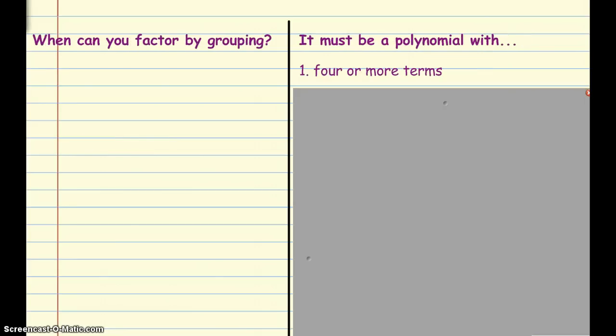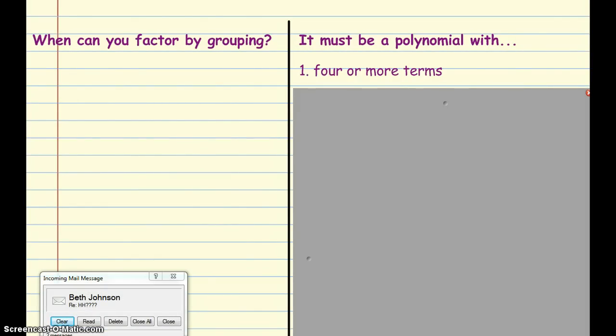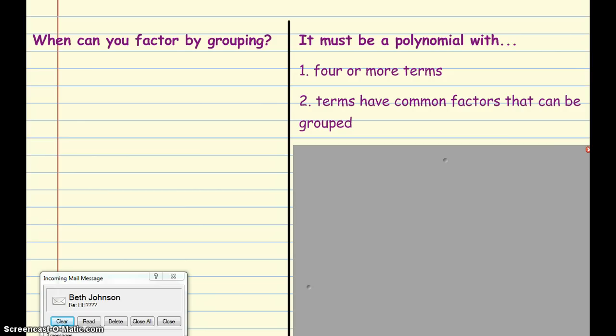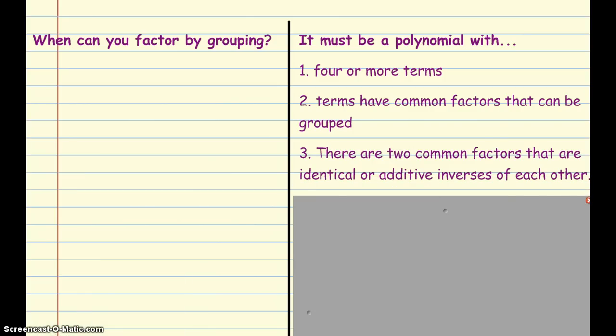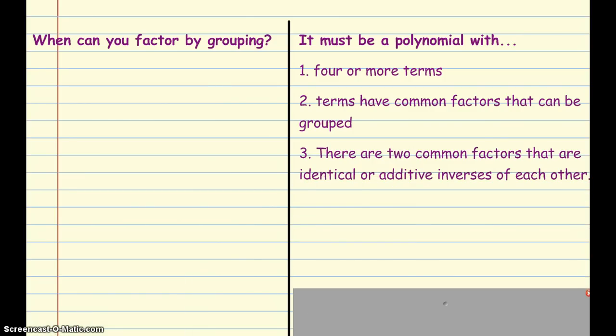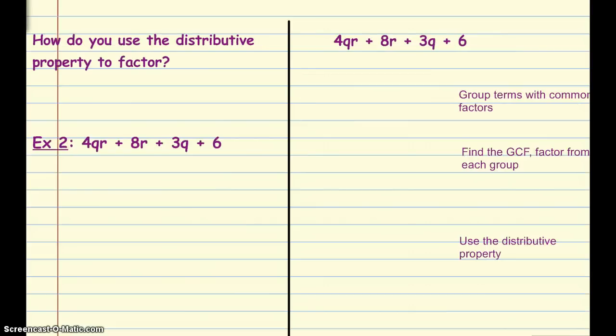Okay, so let's do the second example, or some more directions. It says, when can you factor by grouping? We factor by grouping when it's a polynomial, and it must have four or more terms. The terms have common factors that can be grouped. There are two common factors that are identical or additive inverses of each other. So we're going to do a couple of examples that talk about factoring by grouping. Again, we look for polynomials with four or more terms. We group them so they have a common factor to pull out, and then they must have identical or additive inverses of each other.